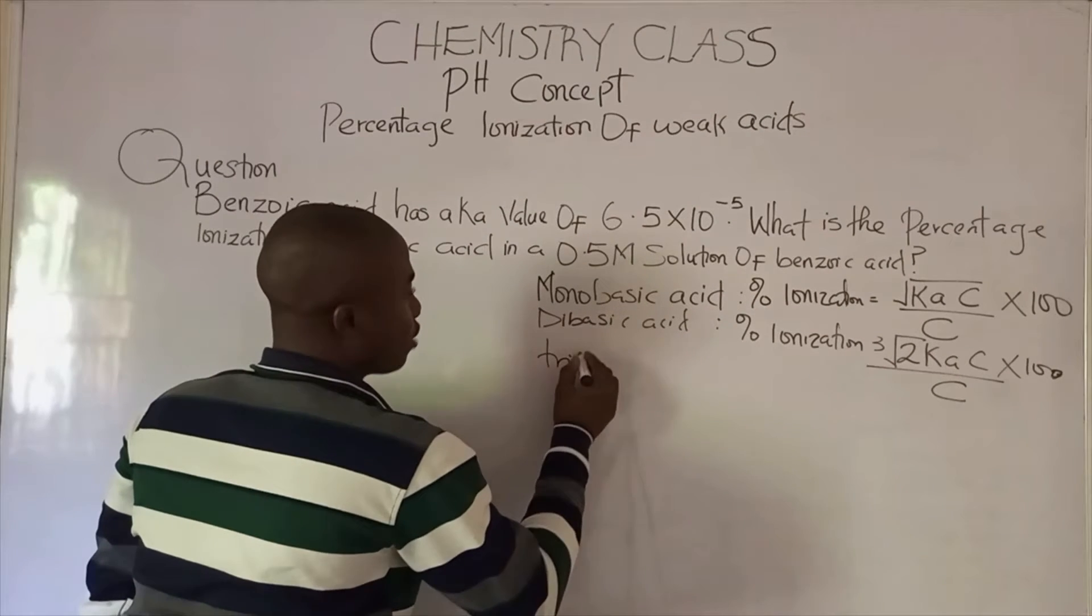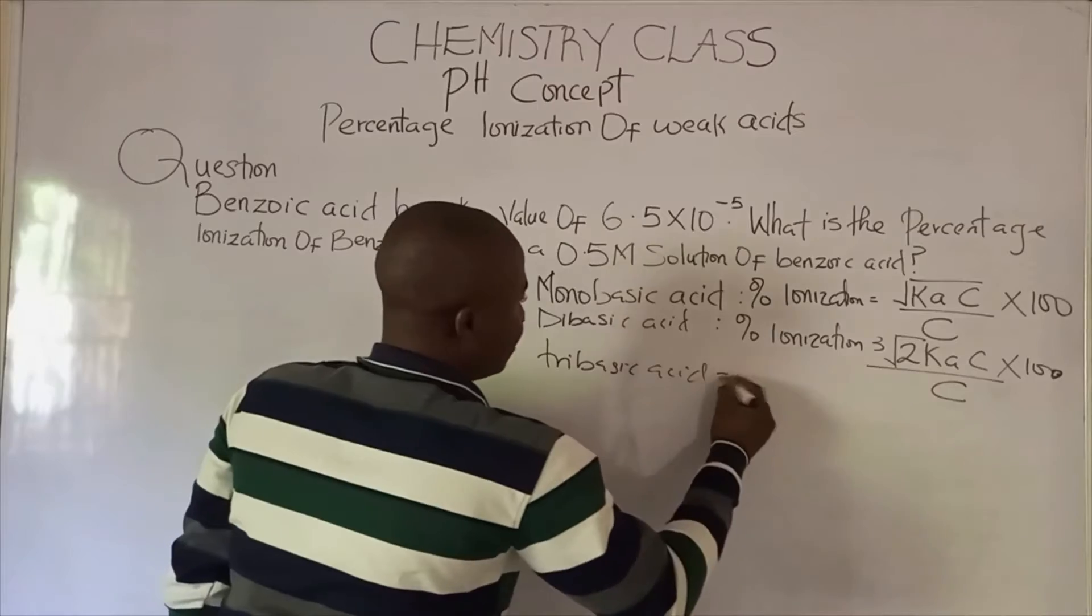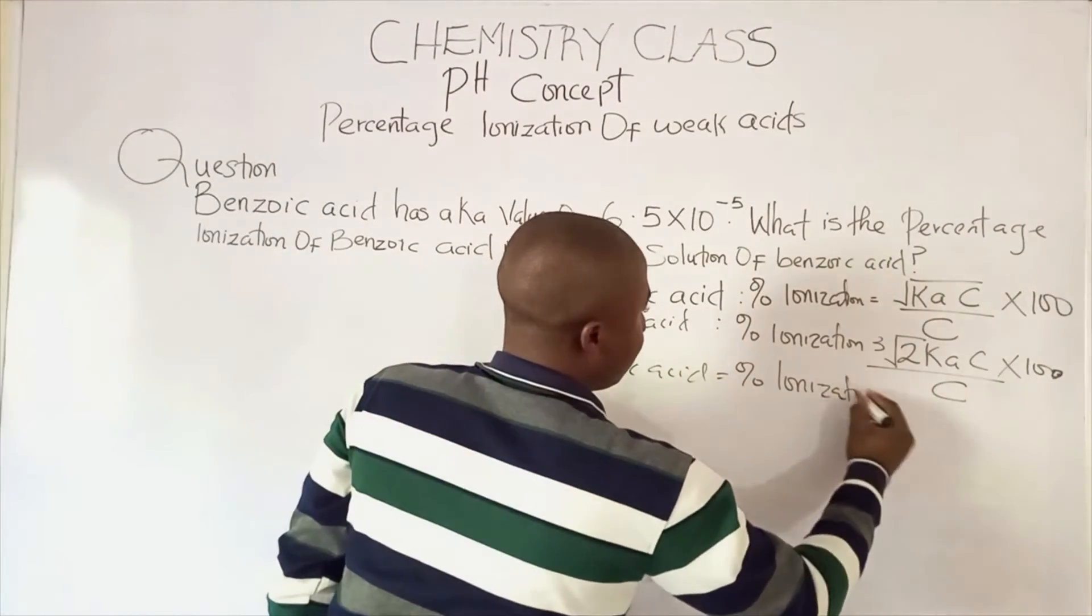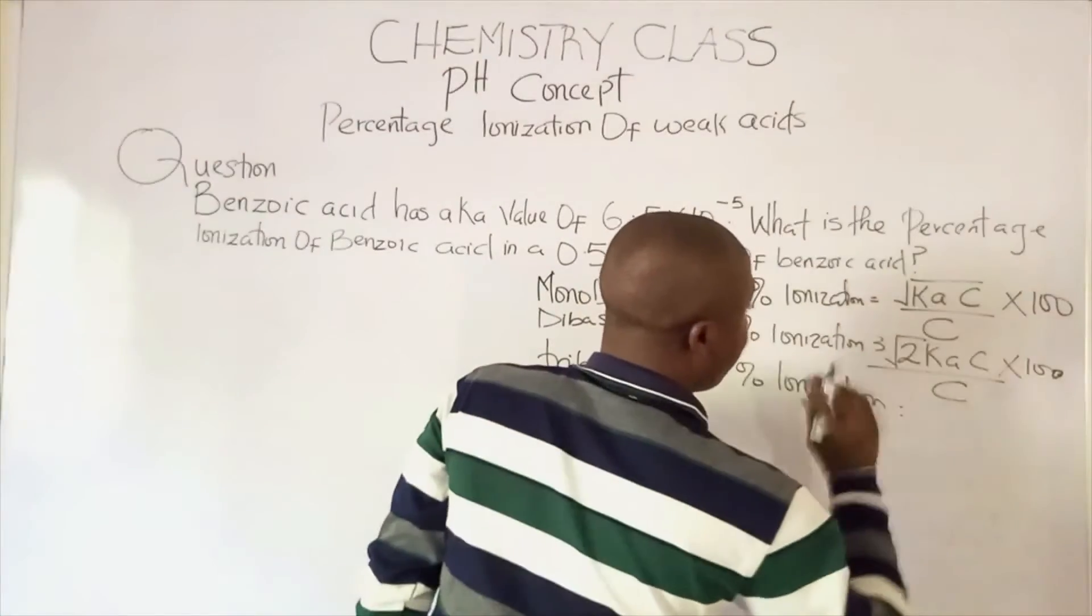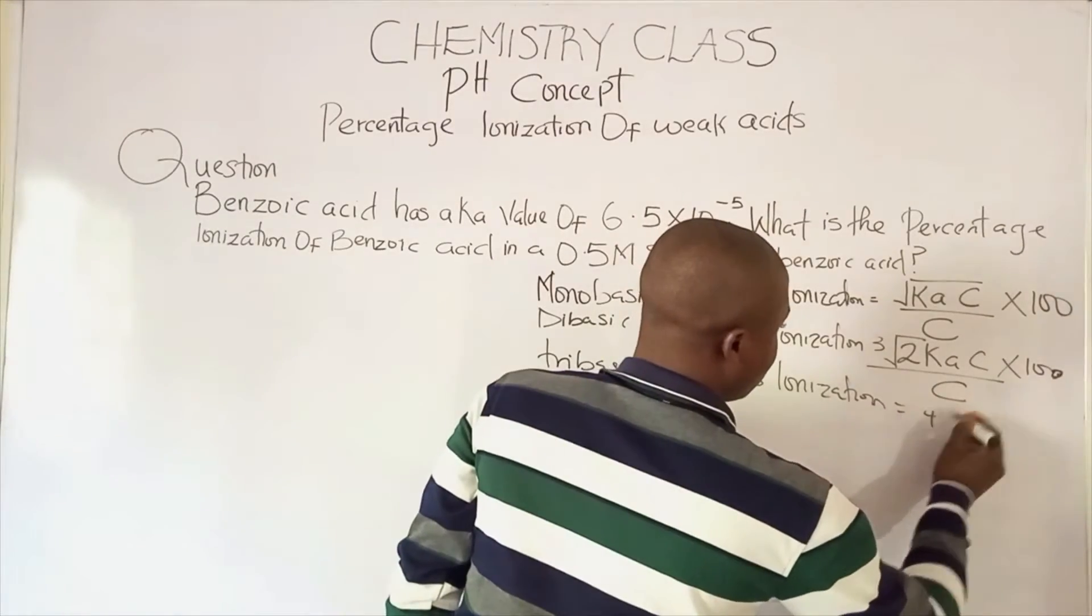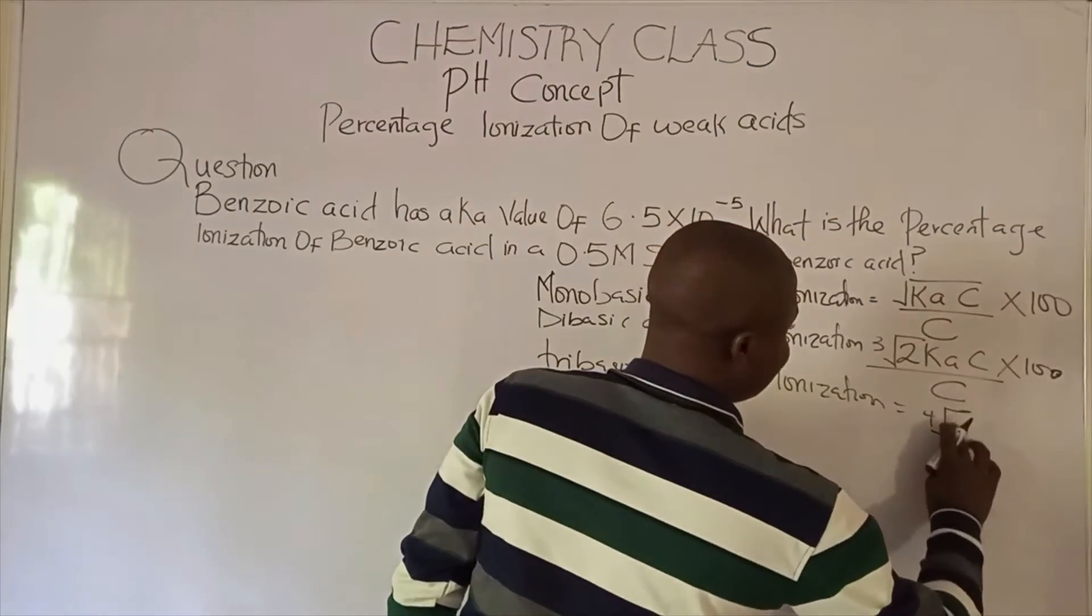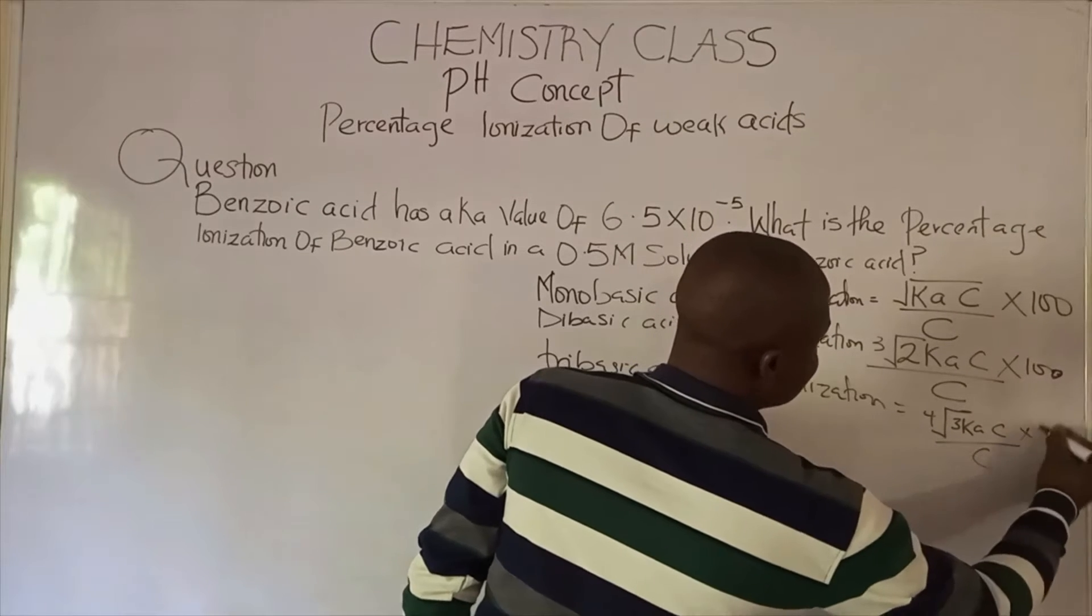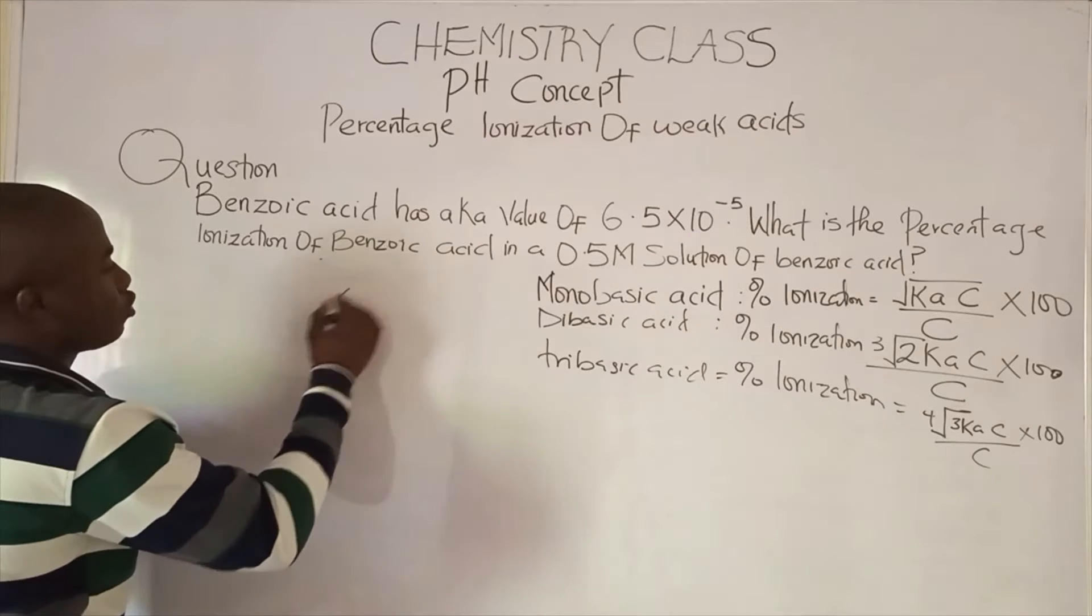For a tri-basic acid, percentage ionization becomes the fourth root of 3Ka times c all over c, times 100.